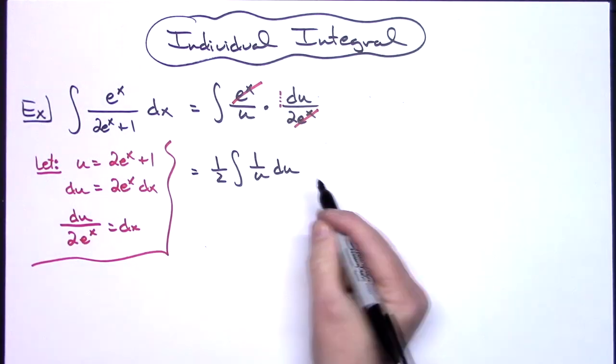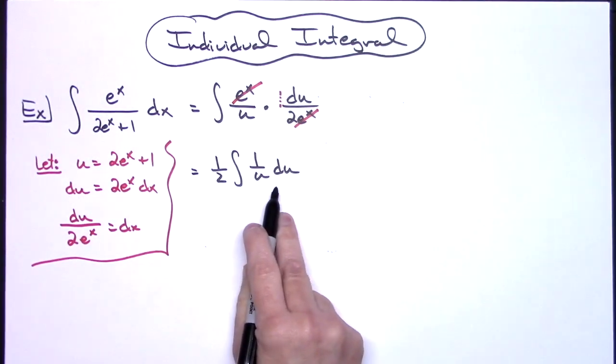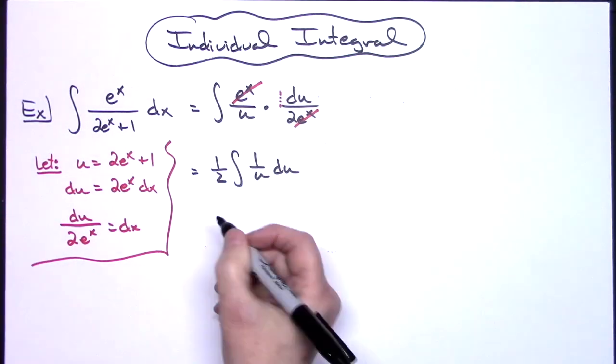And if you're in a calc one class you have this integral memorized as the natural log absolute value of u.